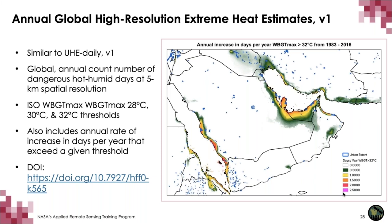The Annual Global High-Resolution Extreme Heat Estimates dataset will be released by NASA CDAC at the global annual count of days at 5 km across three set thresholds, plus the rate of change. For the Arabian Peninsula, a pink pixel increased on average 2.5 days per year from 1983 to 2016 where wet bulb globe maximum exceeded 32°C. A green pixel represents half a day per year — about 17 more days of dangerous hot, humid heat in 2016 than in 1983. The blue areas represent urban boundaries, and I'll show in my demonstration how you can approximate a hot, humid urban heat island effect.